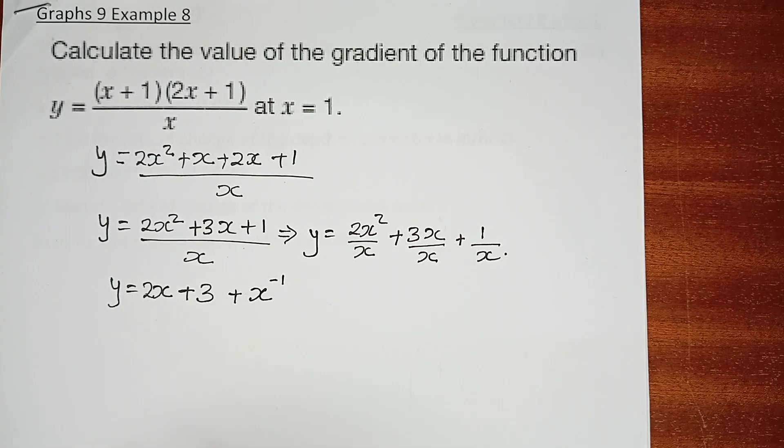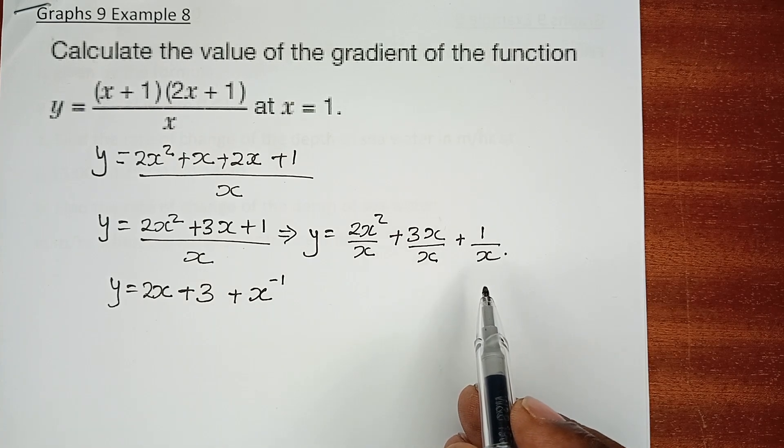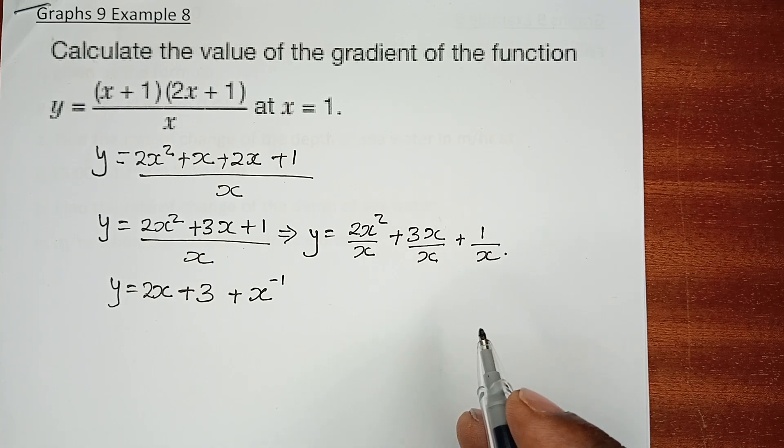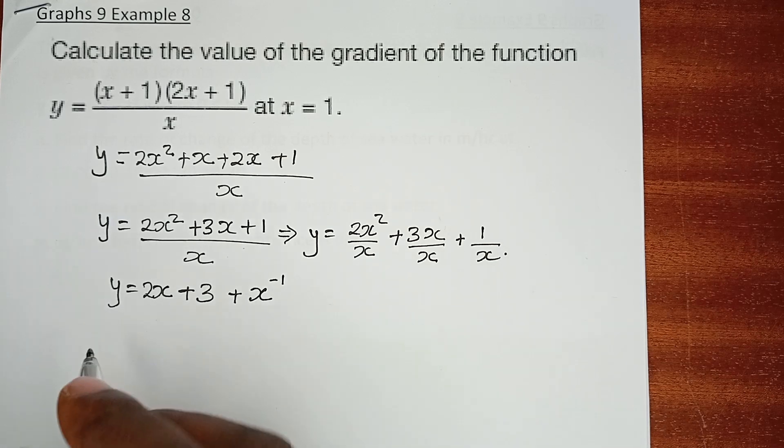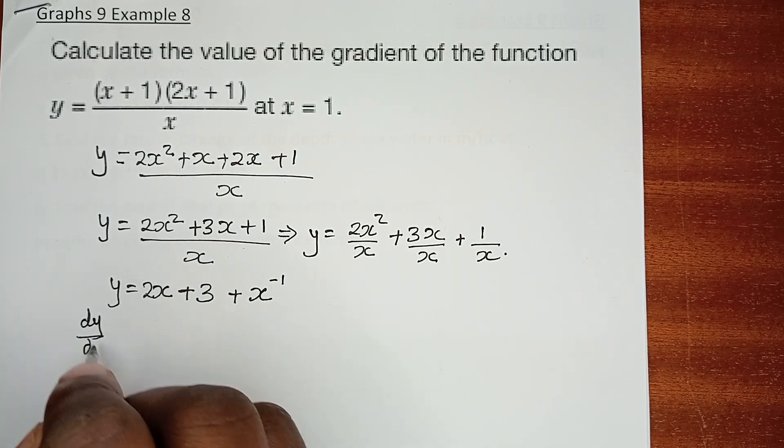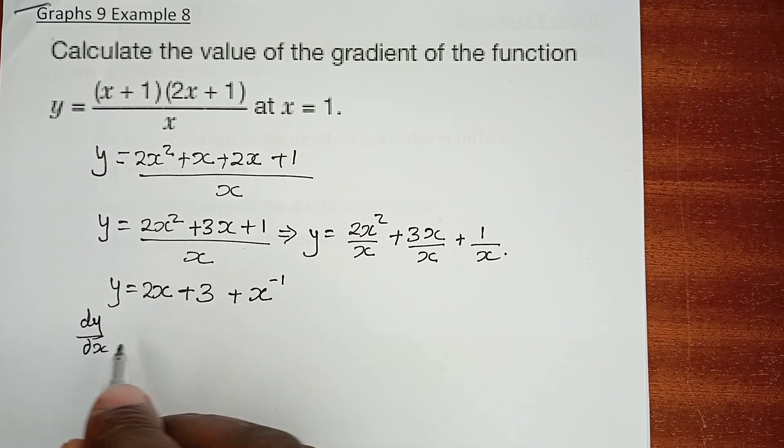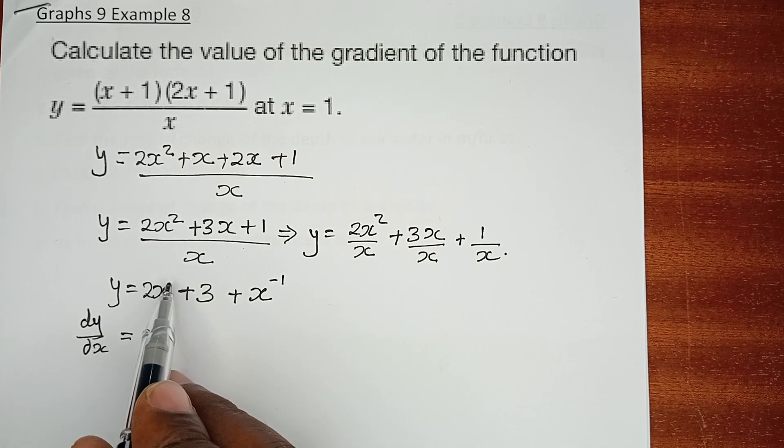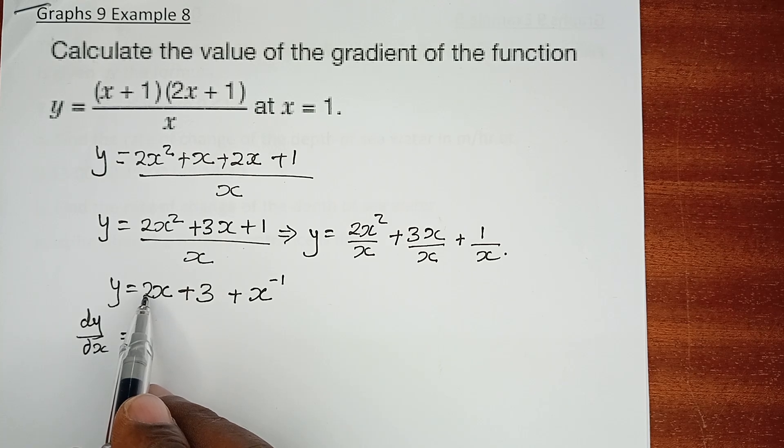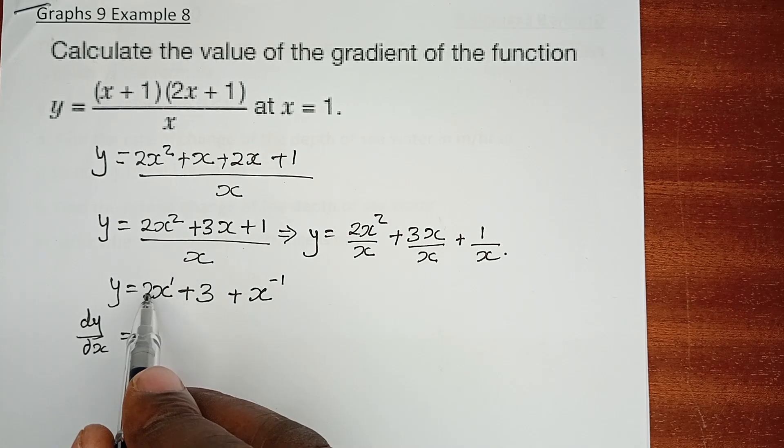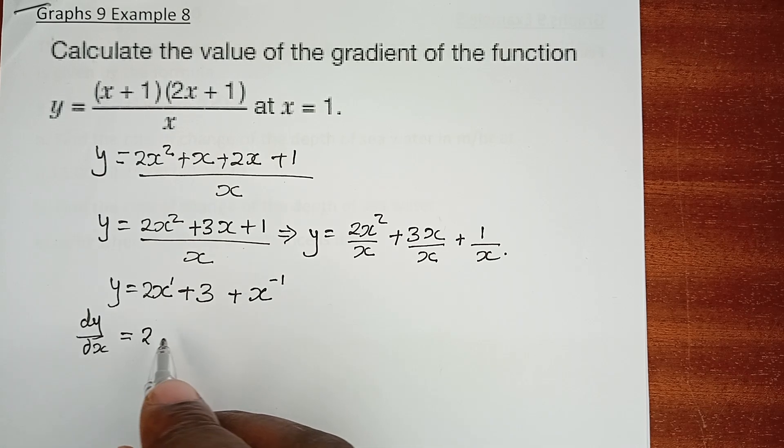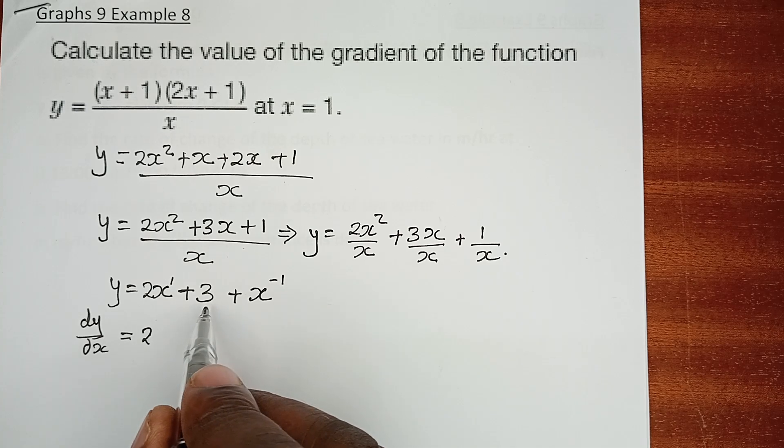Now that we have the function and we don't have any variable at the denominator position, then we can differentiate using our rules. dy/dx, that is the gradient, is 2 times 1, which is 2. x raised to power 1 becomes x raised to power 0, which is just 1. This one is a constant.